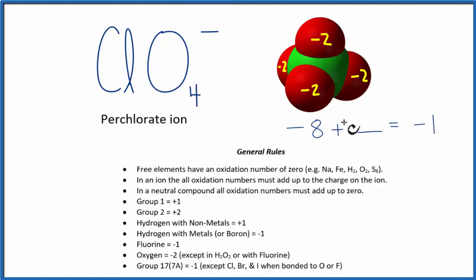So minus 8 plus positive 7, that would give me minus 1. That means the oxidation number on this chlorine here has to be plus 7 in order for these all to add up to give me minus 1.